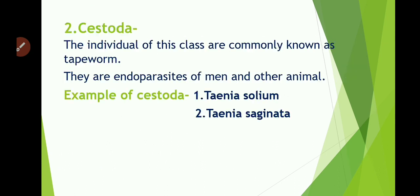The next class is Cestoda. Individuals of this class are commonly known as tapeworms. They are endoparasites of man and other animals. The examples of Cestoda are Taenia solium and Taenia saginata. Out of these two, we are going to discuss only about Taenia solium.